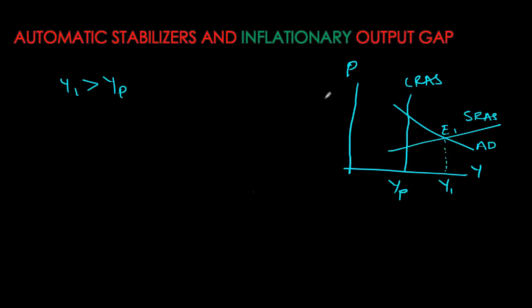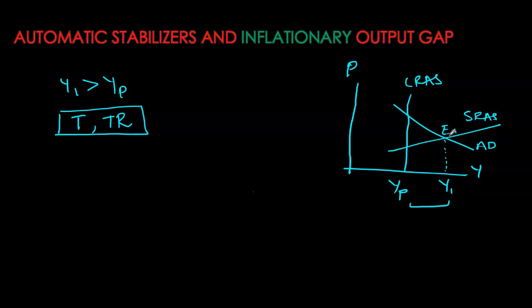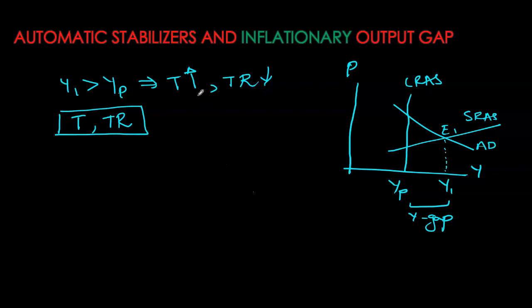To understand automatic stabilizers, let's look at an inflationary output gap. In the diagram, our short-run equilibrium GDP, Y1, is higher than potential. Our initial E1 assumes there are no automatic stabilizers. With existing taxes and transfers in place, as income goes up, households pay more taxes. At the same time, with more households earning higher income, transfers are automatically reduced because fewer people are eligible for government safety nets. So taxes automatically go up and transfers automatically go down.